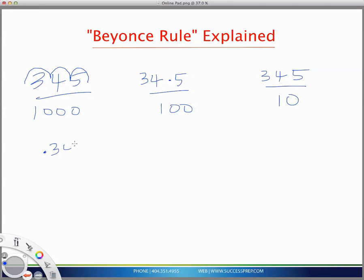And here same thing, two zeros, so you go to the left, to the left, and that gives you 0.345. And here Beyonce rule, just to the left, only one zero, so you go to the left one zero, so it's 34.5.